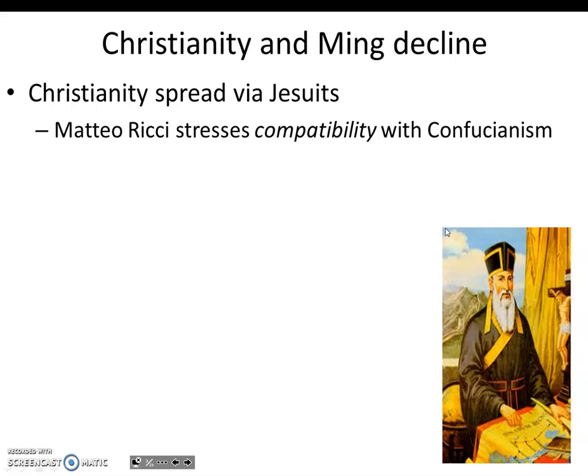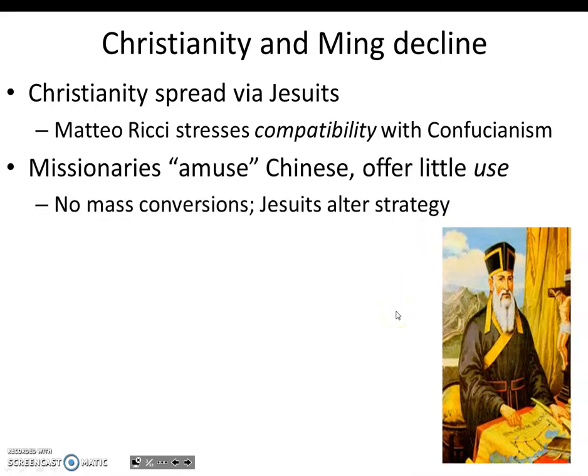Ricci was invited to banquets where he would take part in philosophical debates. He had the remarkable ability to repeat long lists of information backwards as well as forwards, which interested Confucian scholars whose positions were based on knowledge and passage of exams. Some scholars and officials converted, and Jesuits were appreciated for their mathematical, astronomical, and cartographical skills. Chinese artists experimented with European techniques for landscape painting, while Ming astronomers were impressed with telescopes and the ability of Europeans to predict eclipses.